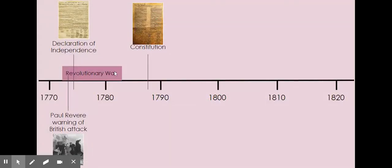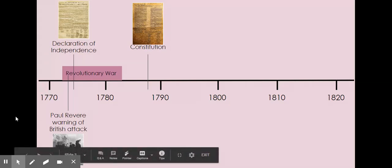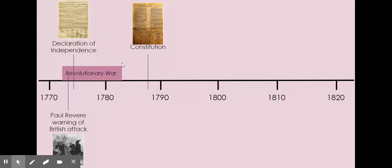That was a war that brought us our freedom. Before, we were kind of owned by Great Britain. We didn't really like the way they were treating us — they were making us pay all these taxes and we couldn't even represent the government. So we got angry and said we wanted independence. That's when the Revolutionary War started. Paul Revere warned us of the British attack, then we wrote a document saying we were going to be free, and we ended up beating them and winning that war.